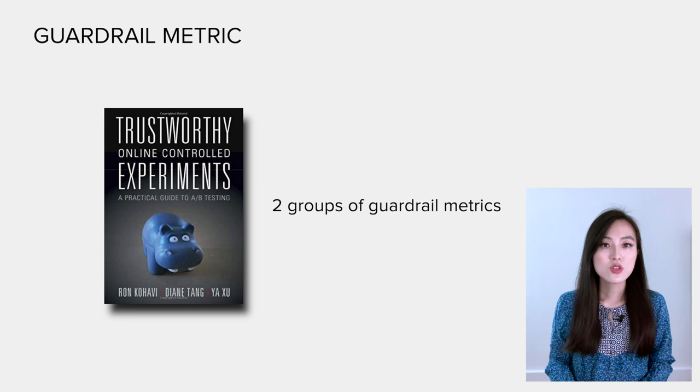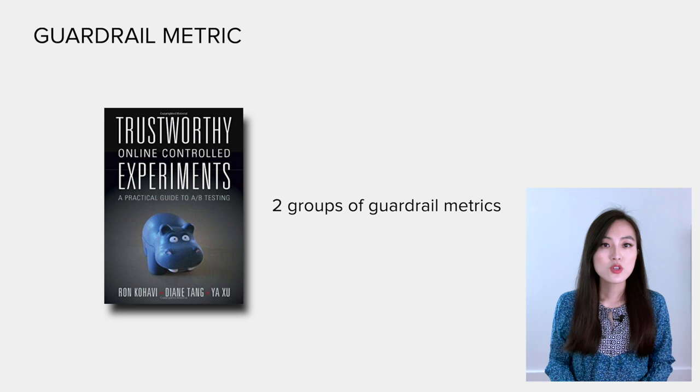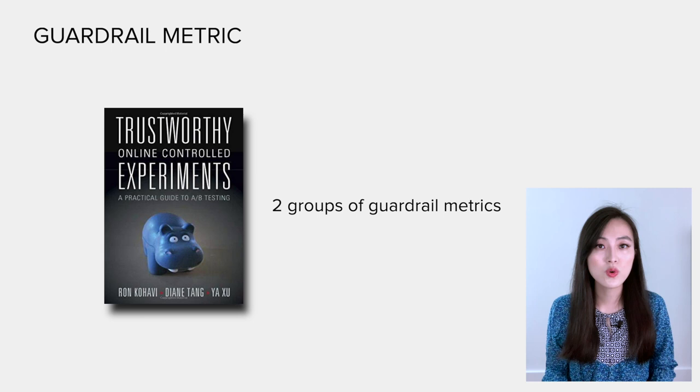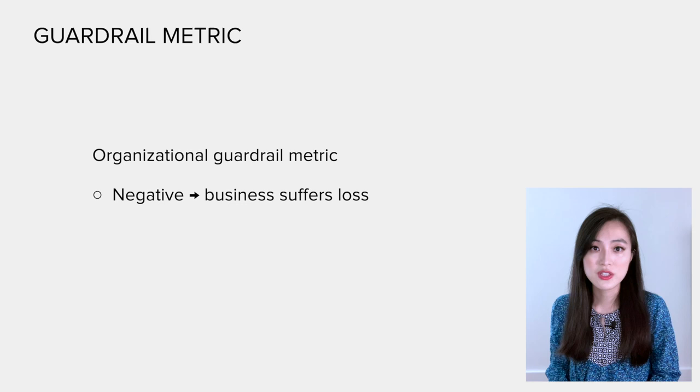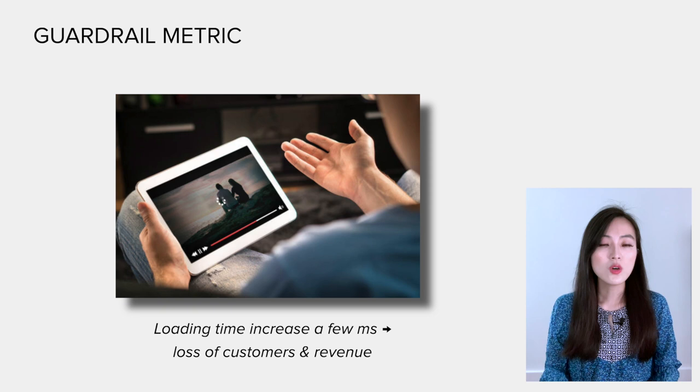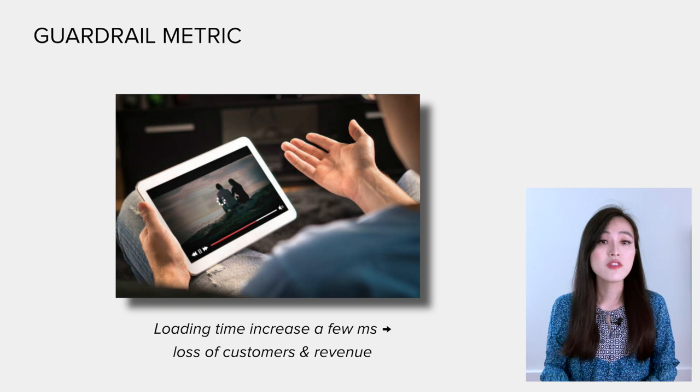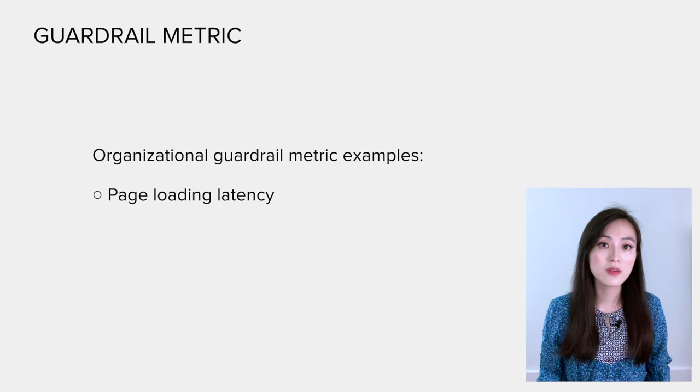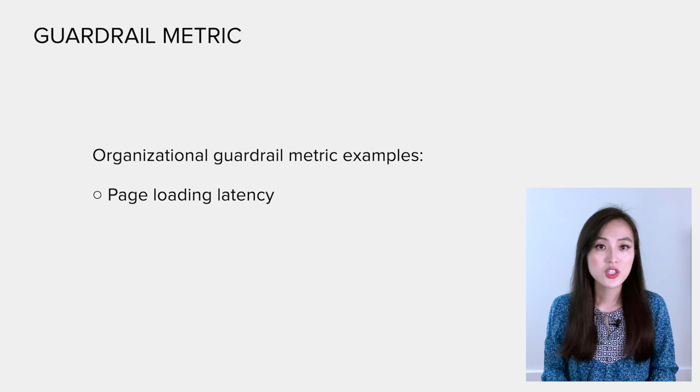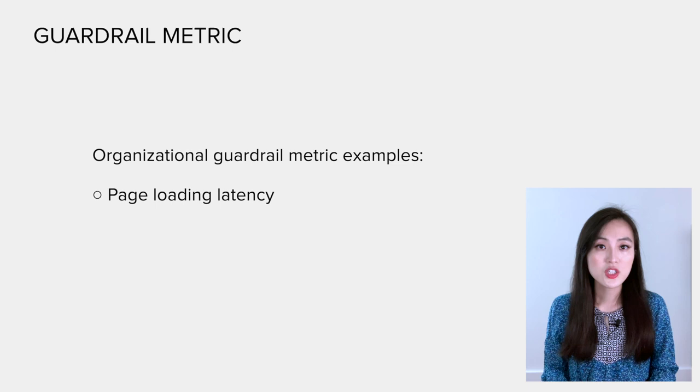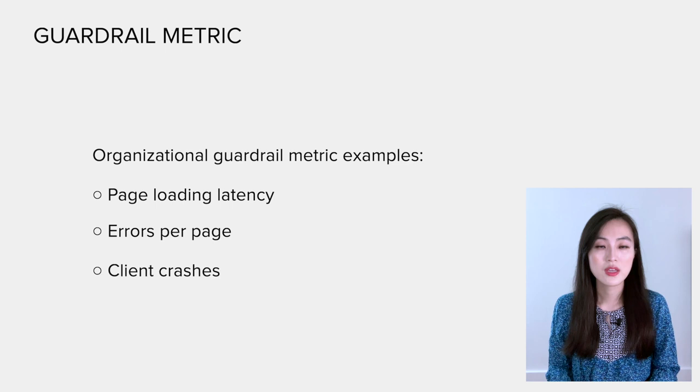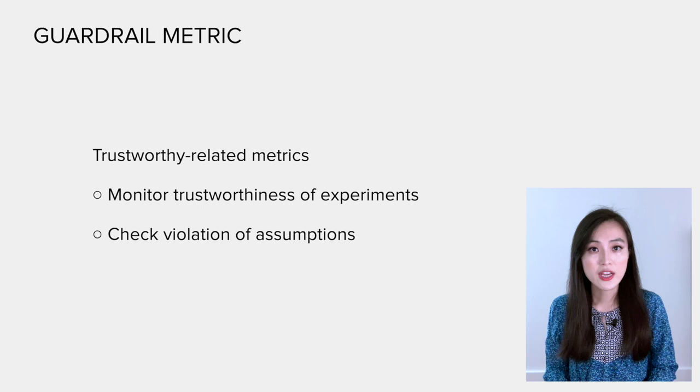The last category of metrics is the guardrail metric. As the name suggests, guardrail metrics guard us from harming the business and validating important experiment assumptions. In this book it categorizes guardrail metrics into two groups, which I think is very helpful to understand different roles of guardrail metrics. The first one is the organizational guardrail metric. If this kind of metric shifts to the negative direction, the business will suffer significant loss. For example, if the loading time of a web page increased by a few milliseconds, there can be a significant loss of customers and revenue. In practice, the page loading latency is often used as a guardrail metric when new features are developed and tested through A/B testing. A few other commonly used organizational guardrail metrics include errors per page and client crashes.